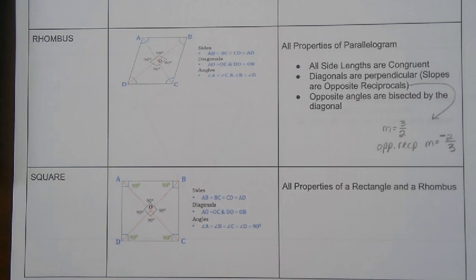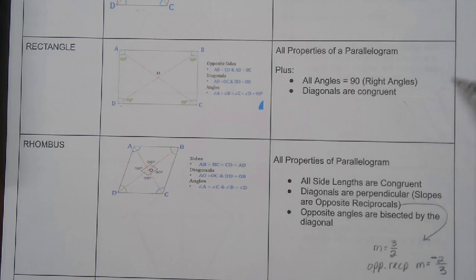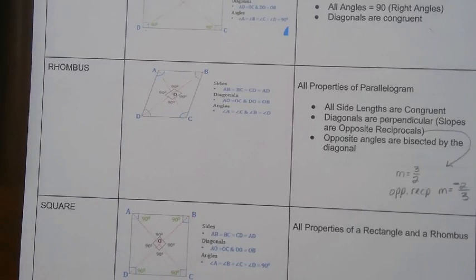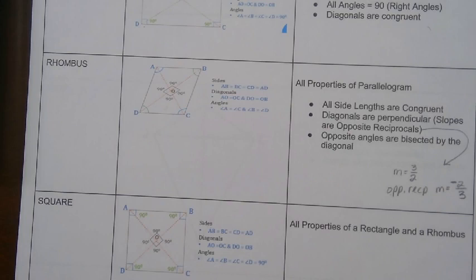And then a square just has all of the properties of the rhombus and all of the properties of the rectangle. And then by default, it also has all the properties of that parallelogram. So this table is going to be something that we're going to kind of refer back to as we start to do the problems for this unit, for this section.